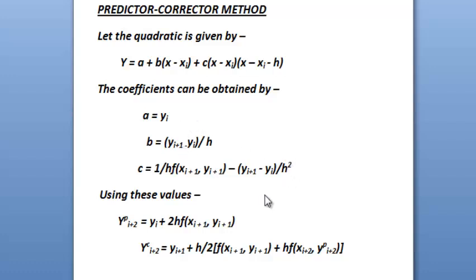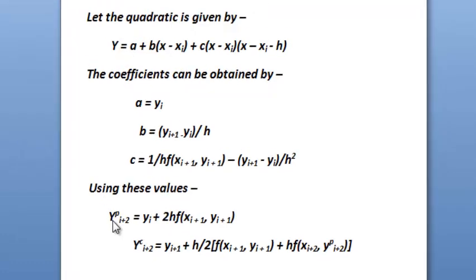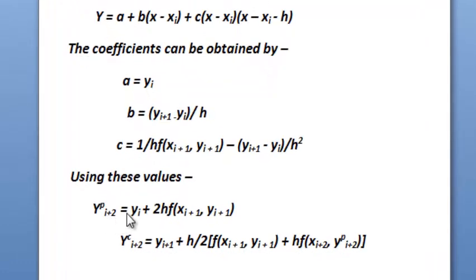Now using these values of the coefficients, we can get the predicted value of yi plus 2 equals yi plus 2h into f of xi plus 1 comma yi plus 1. We will make use of this equation in our algorithm.